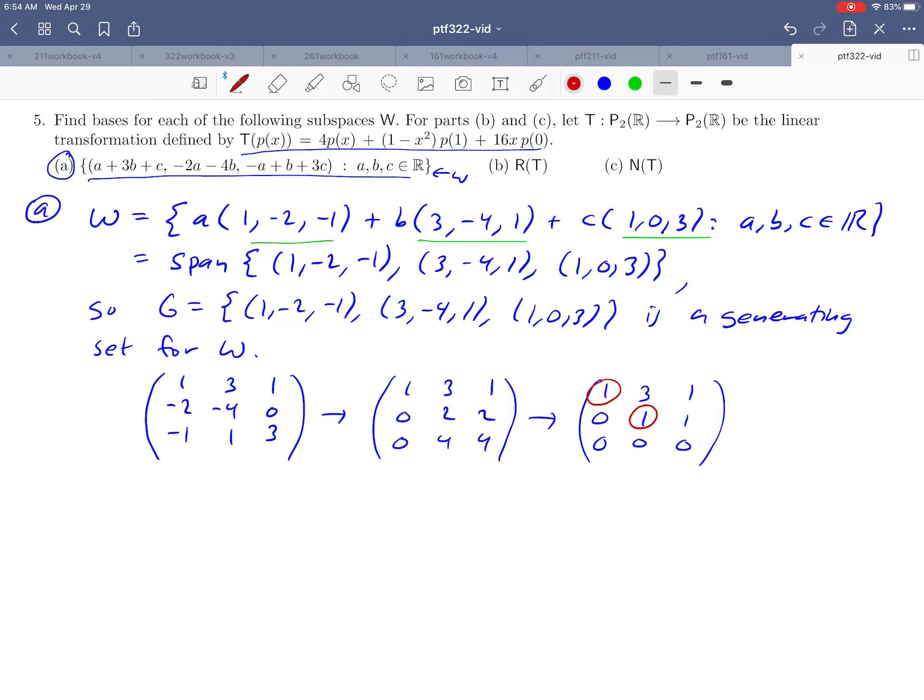We notice that the pivot positions, the only pivot positions are in the first and the second column. Which tells us that we can reduce this generating set to a basis by just taking the two vectors that correspond to those pivot columns.